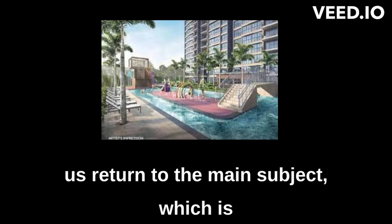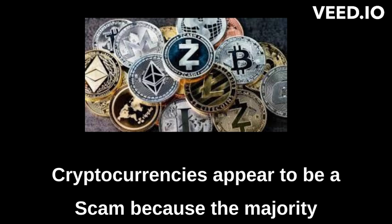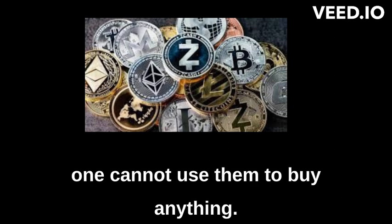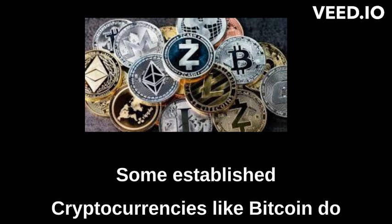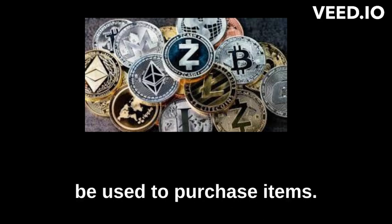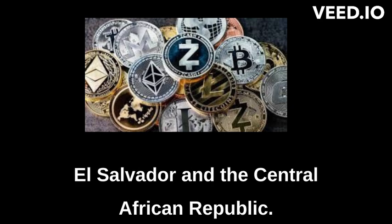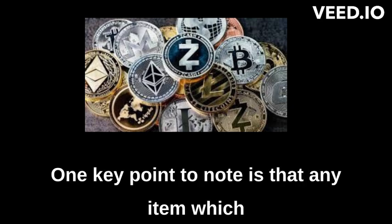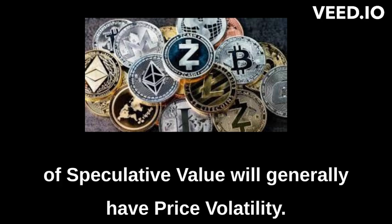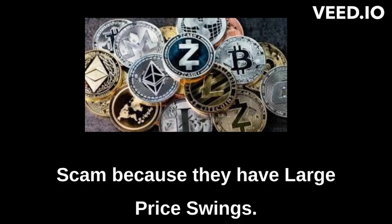Let us return to the main subject, which is why do cryptocurrencies seem like a scam? Cryptocurrencies appear to be a scam because the majority of cryptocurrencies do not have any intrinsic value, because one cannot use them to buy anything. Some established cryptocurrencies like Bitcoin do have intrinsic value because they can be used to purchase items. In fact, Bitcoin is even legal tender in El Salvador and the Central African Republic. One key point to note is that any item which has a large component of its market value made up of speculative value will generally have price volatility, and this is why cryptocurrencies seem like a scam because they have large price swings.